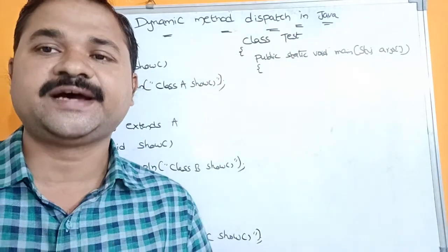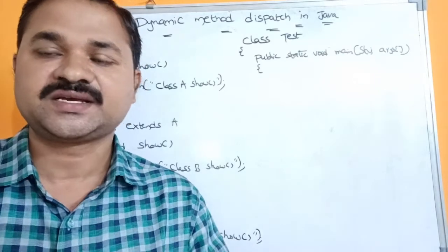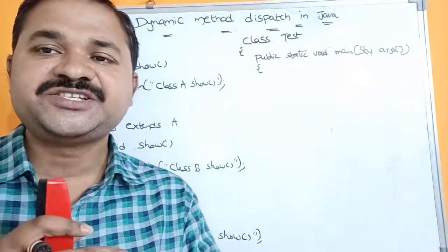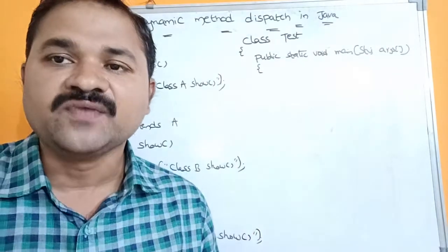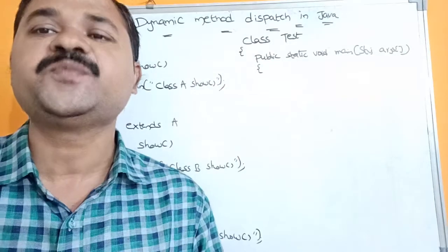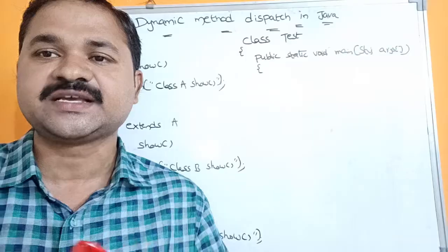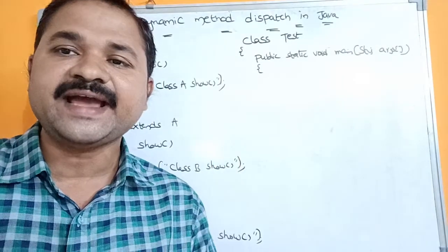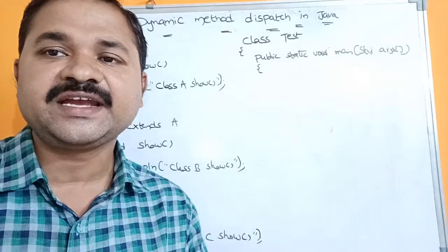Dynamic means Runtime. Dynamic method dispatch is also called Runtime method dispatch. The decision about which method will be called is resolved during runtime or execution time. That's why this mechanism is known as dynamic method dispatch.